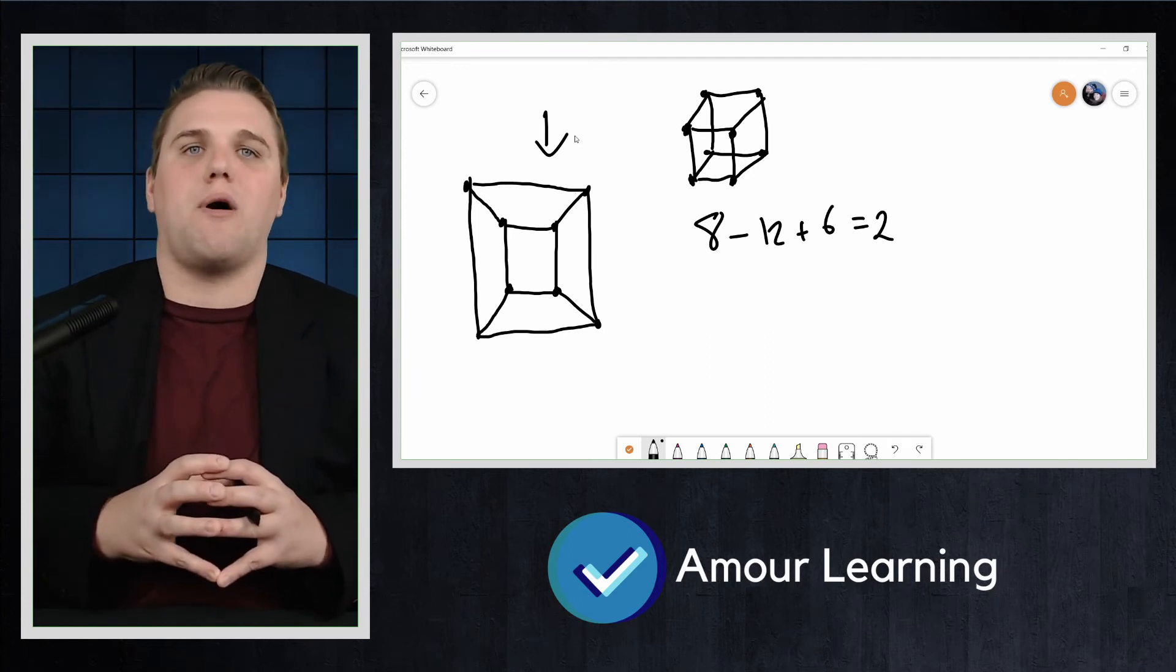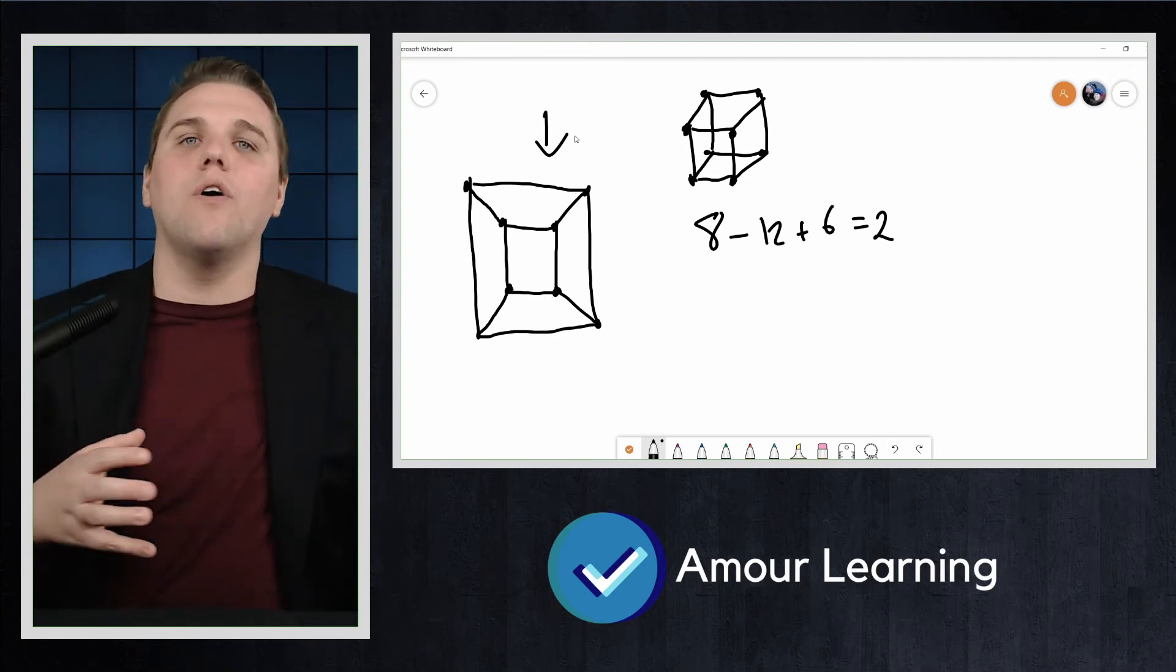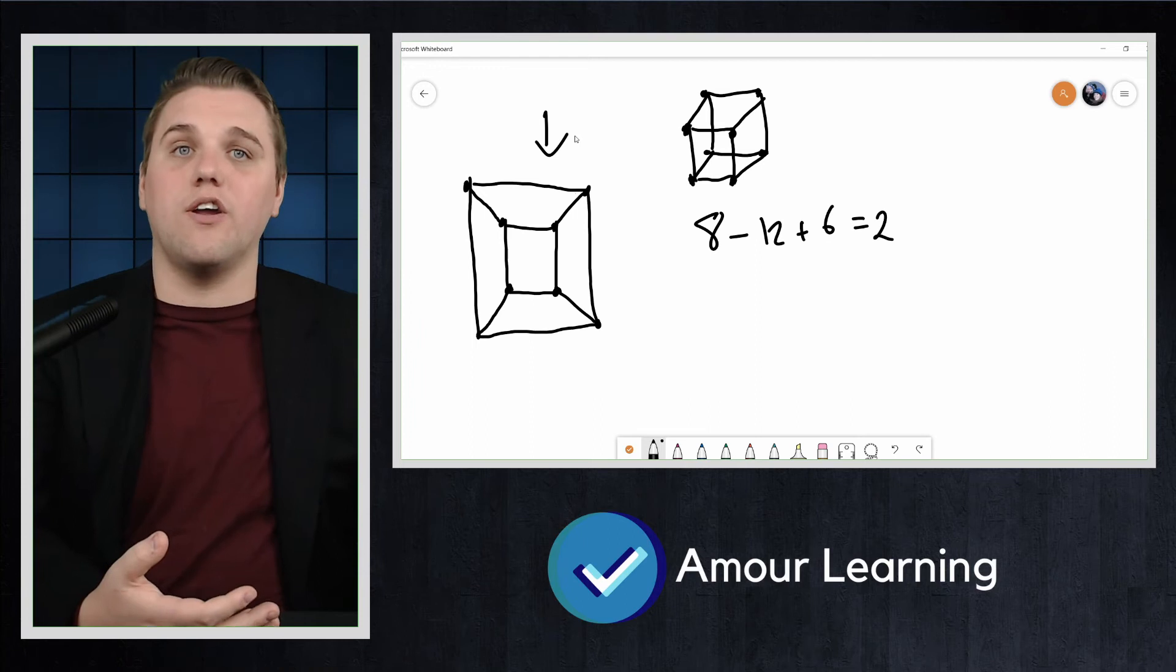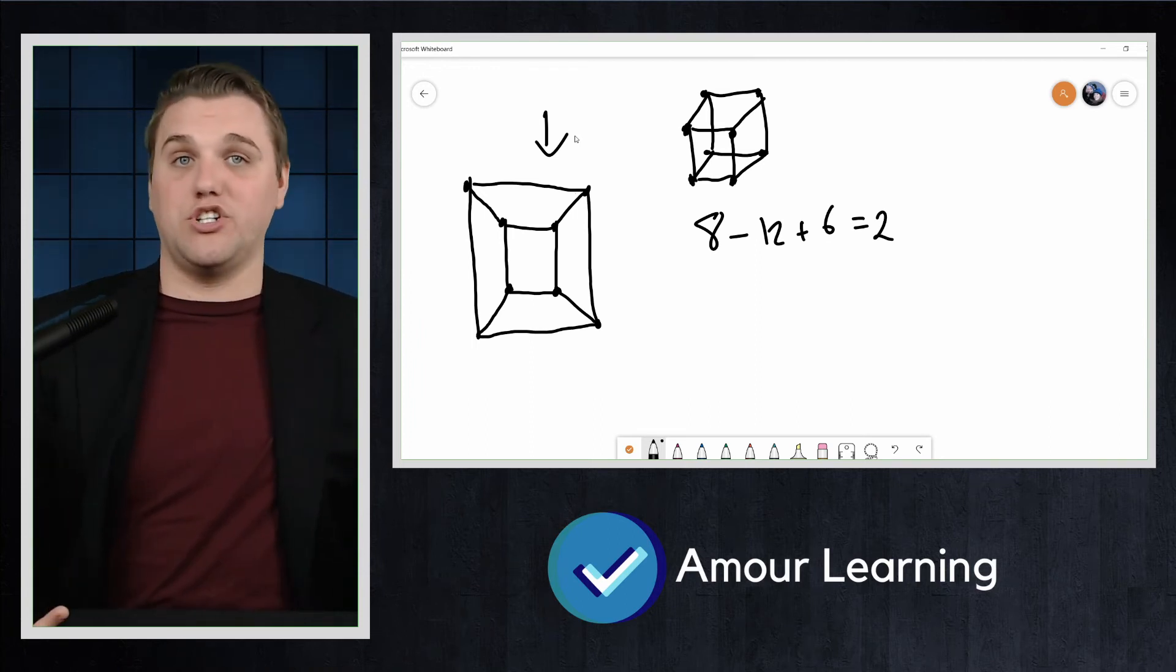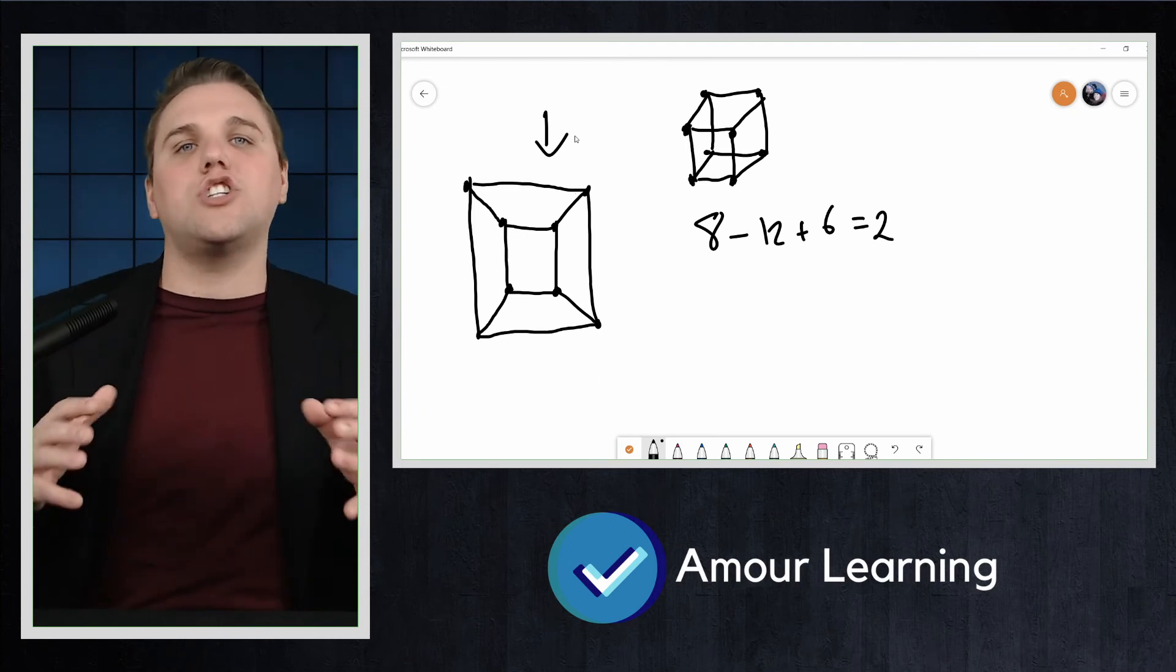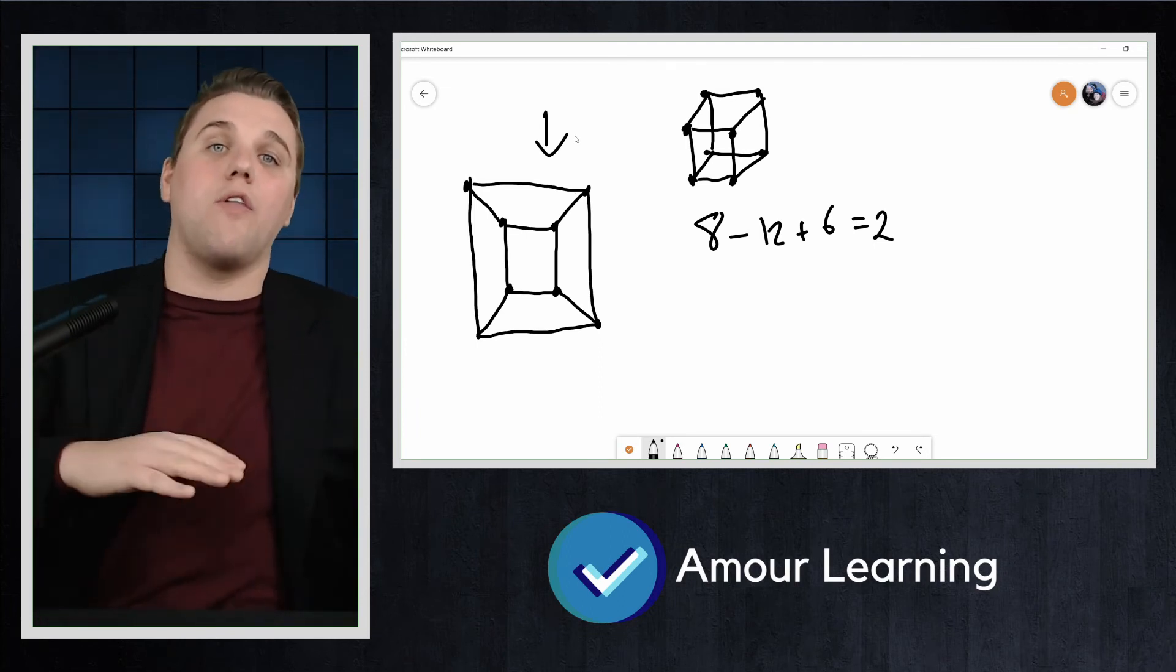The edges and vertices of the polyhedron cast a shadow onto the interior of the sphere. You can then cut a hole in the sphere in the middle of one of the projected faces and stretch the sphere to lie down flat on the plane.